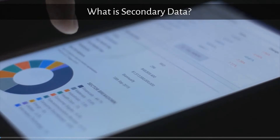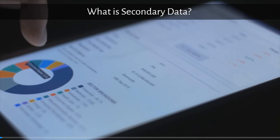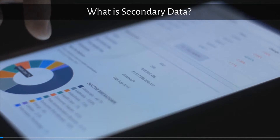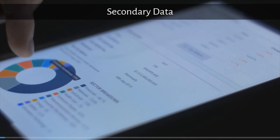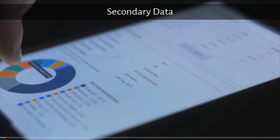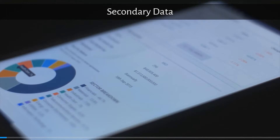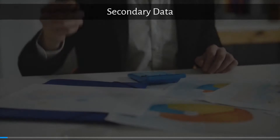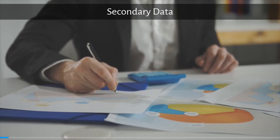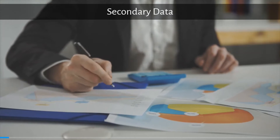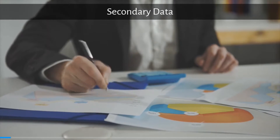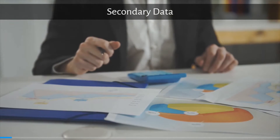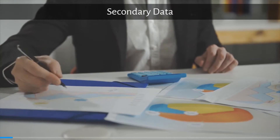Secondary data is data previously collected for any purpose other than the one at hand. In the future, we may need data in regards to something very specific and particular that may not have been done yet. However, by looking at the secondary data that's already out there, it may help us to very quickly build up data that we can then analyze and convert to information.